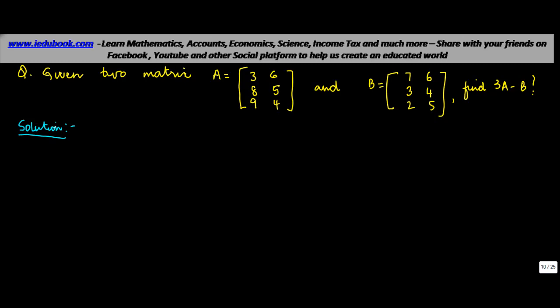Now we saw in the earlier section how to multiply a matrix with a scalar. There are two operations here: one is you have to find 3 times A, and once you get this you need to subtract matrix B from that.